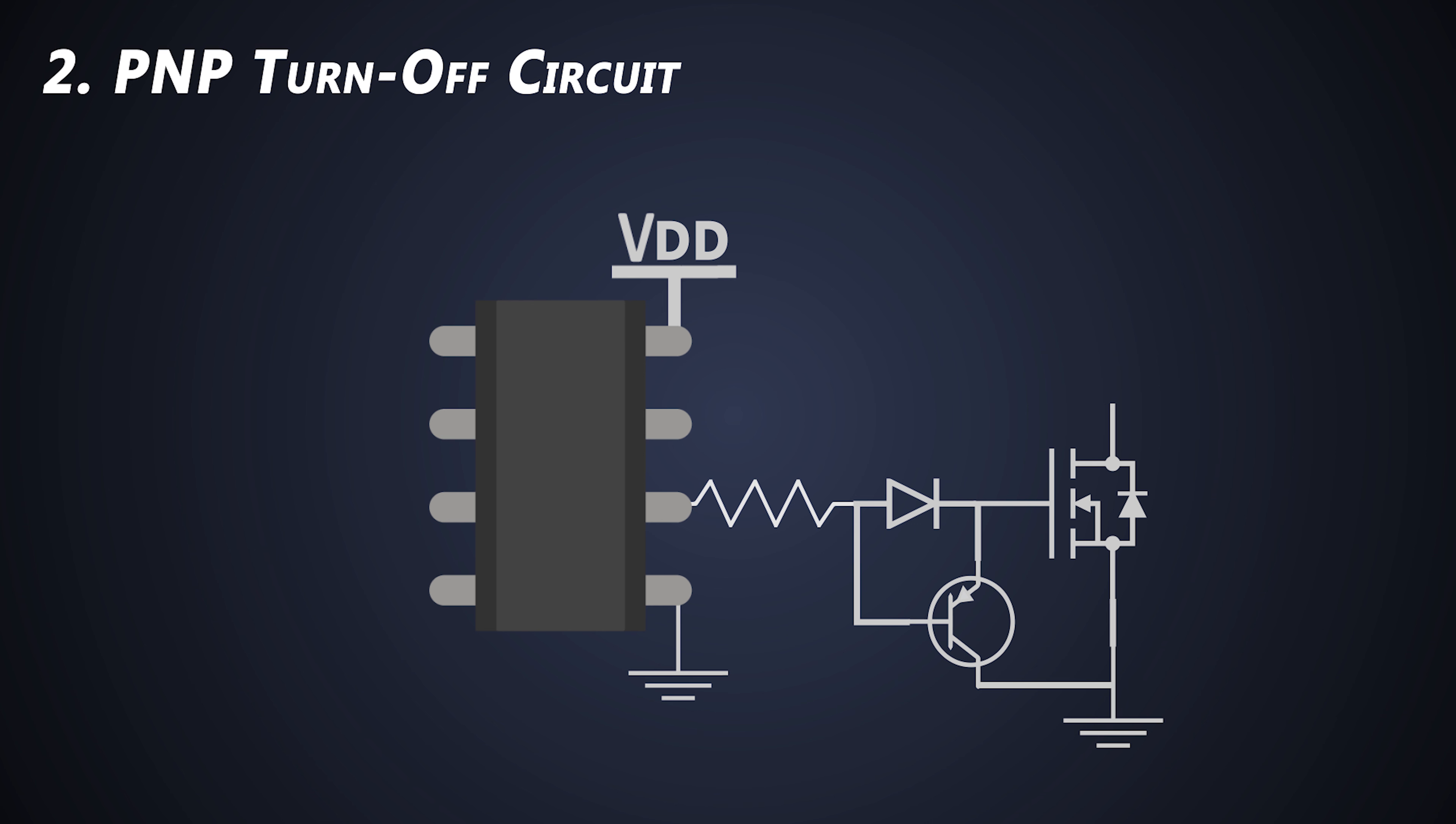The gate resistor limits the turn on speed and this diode provides the path for the turn on current. Also, it protects the base emitter junction of the PNP BJT against the reverse breakdown at the beginning of the turn on process. The most important advantage of the solution is that higher peak discharge current of the MOSFET input capacitance is confined in the smallest possible loop between the gate source and collector emitter connection of the two transistors.